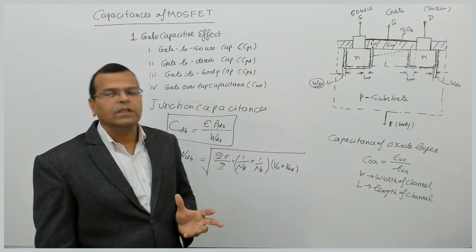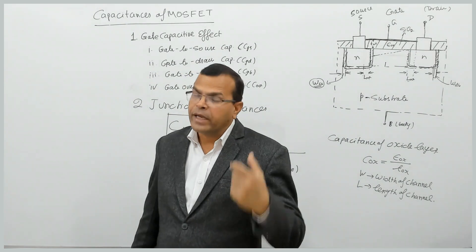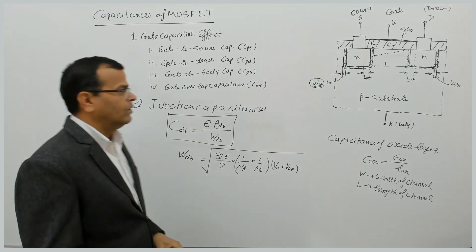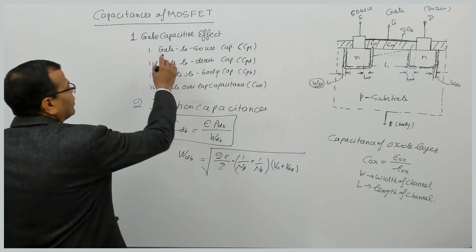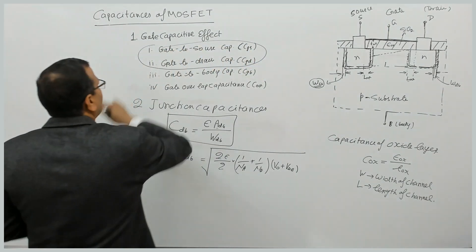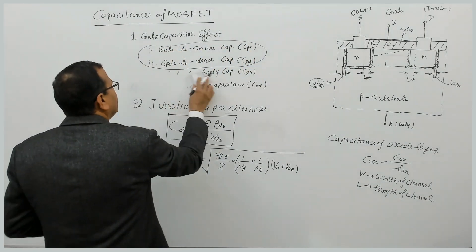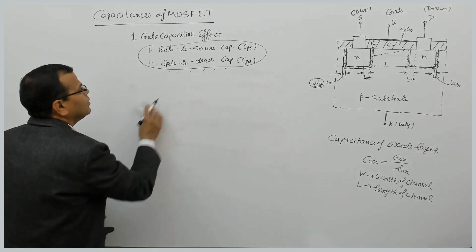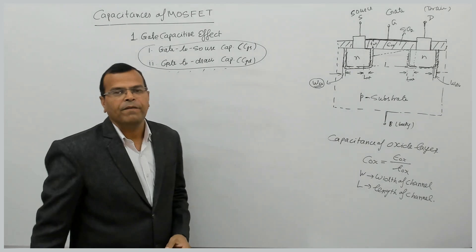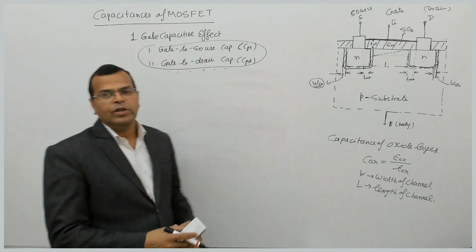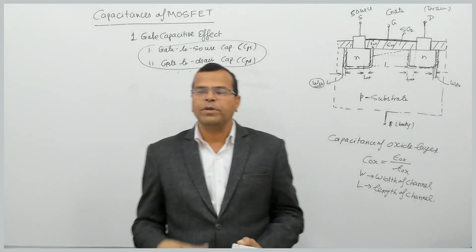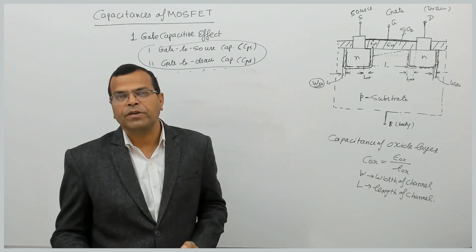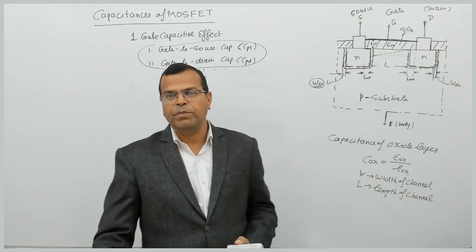These are the different capacitances existing in MOSFET. However, not all of these capacitances are used for studying the high frequency response. For the high frequency response, only gate-to-source and gate-to-drain capacitances will be used. In the next video, I will be talking about the high frequency model of MOSFET. Thank you very much for watching the video.